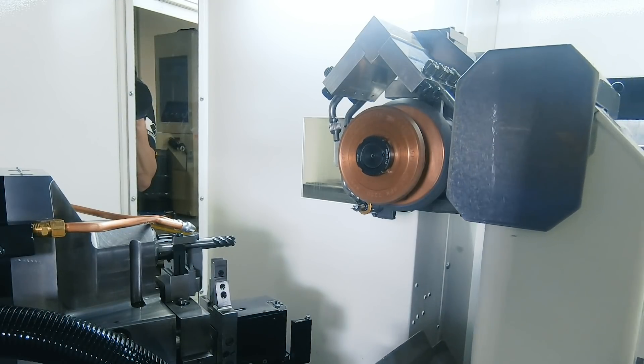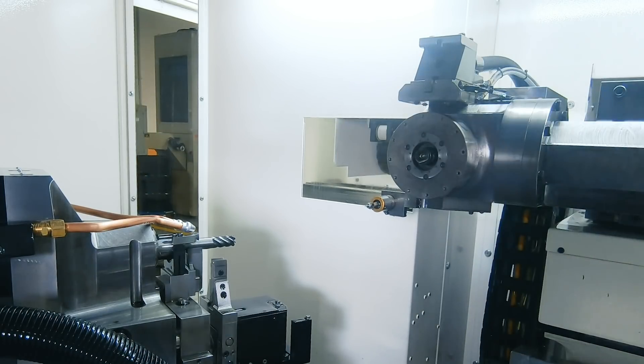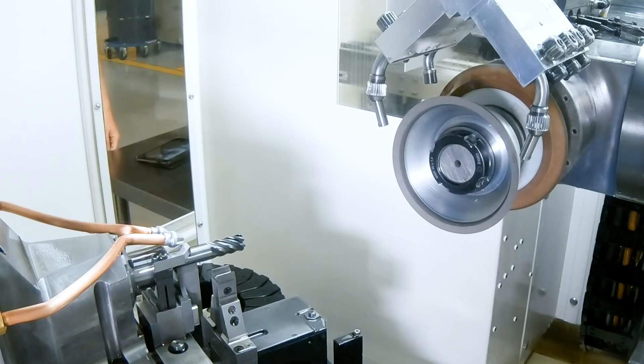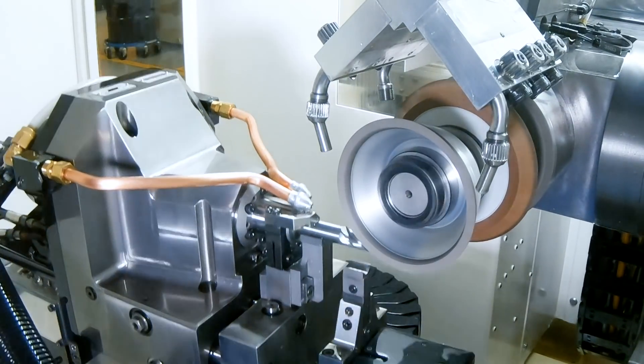We're going to have a wheel package change here. Take that package out. This is what we call a cup and gash package. We've got a cup wheel on the front, a gash wheel.